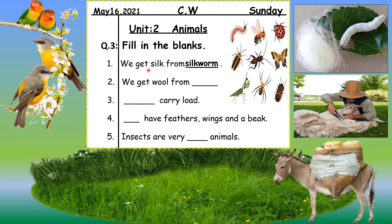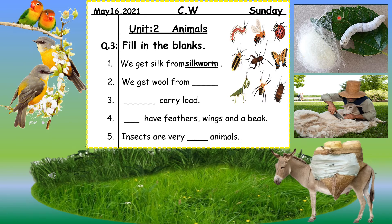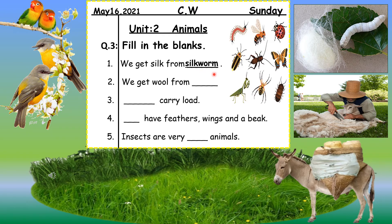Sentence number one: 'We get silk from ___.' From where can we get silk to make silky clothes? As you can see on the right, the first picture on the slide shows a worm insect — it is called a silkworm. We get silk from a worm called silkworm, spelled S-I-L-K-W-O-R-M.